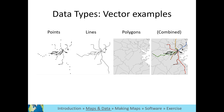Here you see an example of points, lines, and polygons, and all three combined. Based on how these vector layers are color-coded and symbolized, what might this dataset represent? If you guessed transportation, you would be correct. These are the subway stops, lines, and towns in Boston, United States.